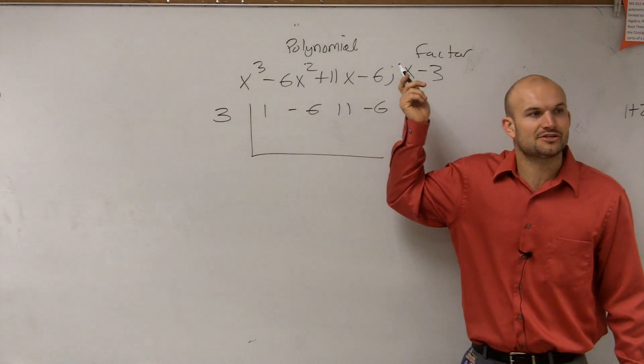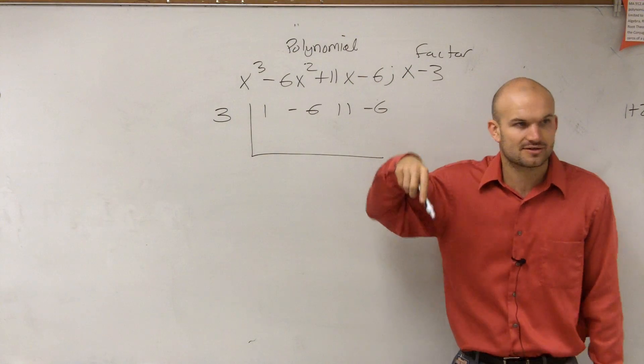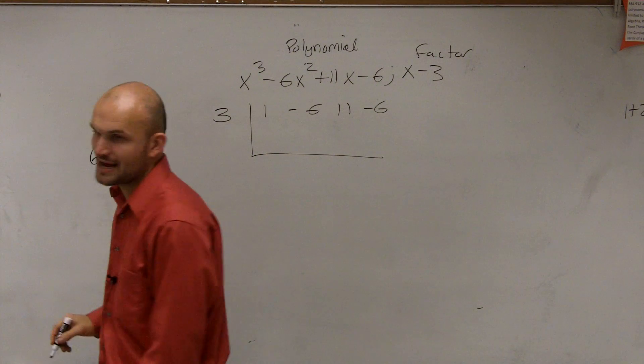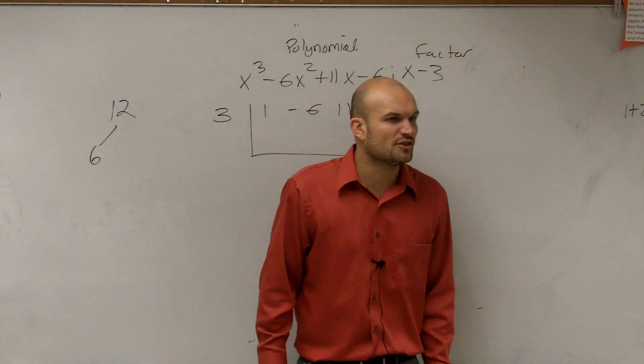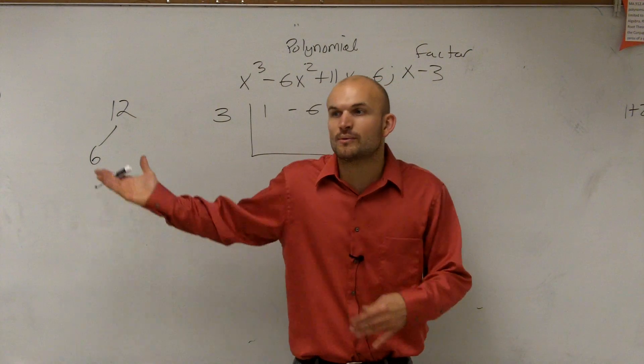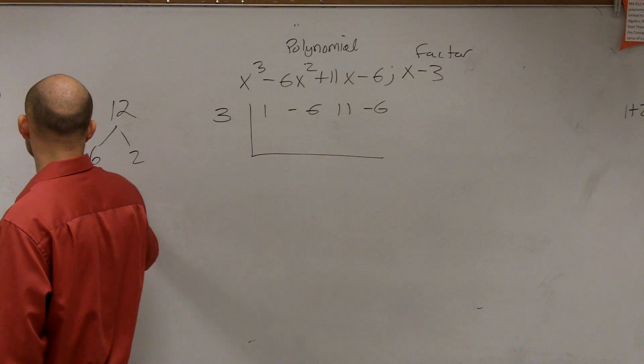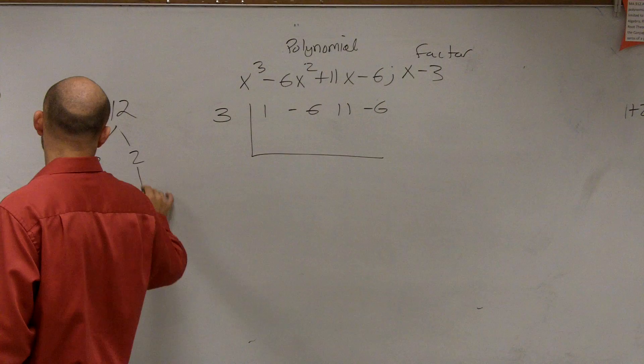It says, if this is a factor, tell me all the other factors. So that's like saying, okay, if here's number 12, and I say 6 is a factor, tell me all the other factors. Or what we like to say is factor this completely. So you can say, oh, well, that's 6 times 2, 3 times 2, times 2.